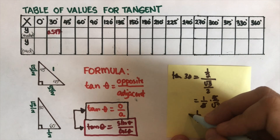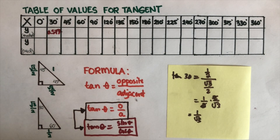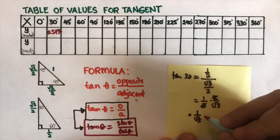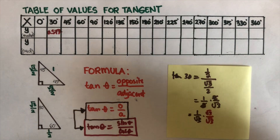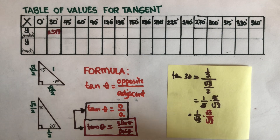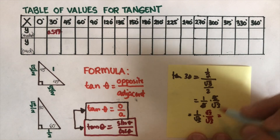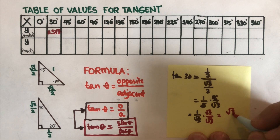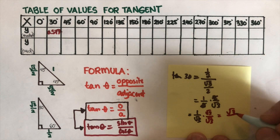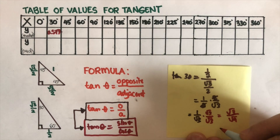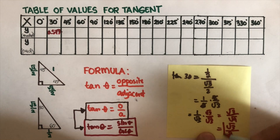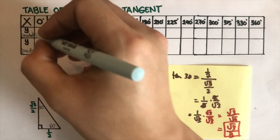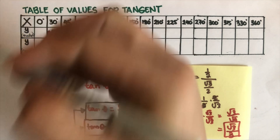Just a reminder: in math, the radical should not be in the denominator. So from here we multiply by square root of three over square root of three to eliminate the square root at the bottom. This gives square root of three over square root of nine, which is three. So the exact value for tangent 30 is square root of three over three.